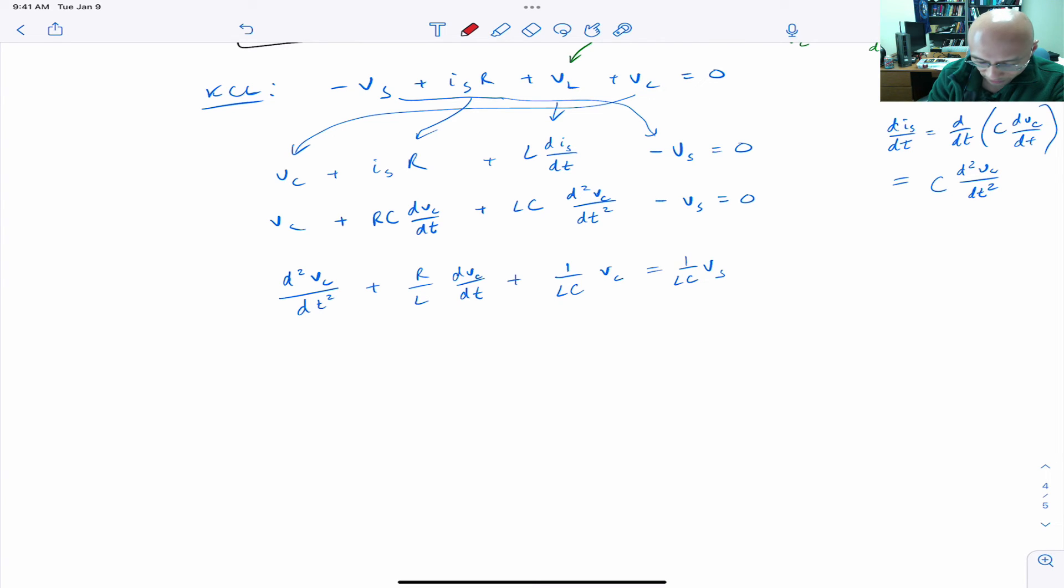Now we have a second order differential equation. And since this is the source, this could be some function of time, it could be constant. But we think of this as the driving function. And then we have one dynamical variable, that's this VC. And this is called the circuit response.